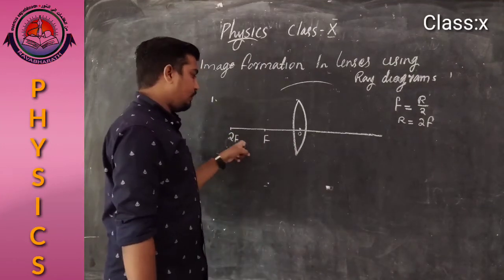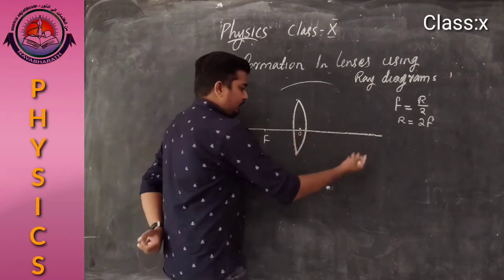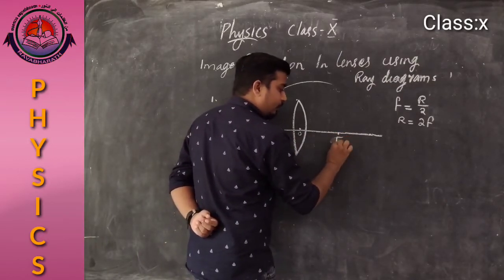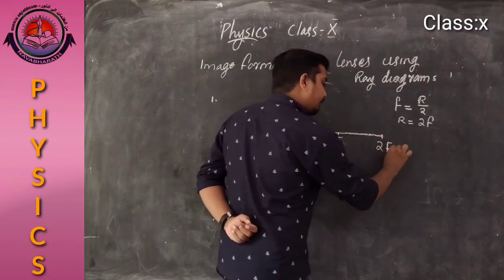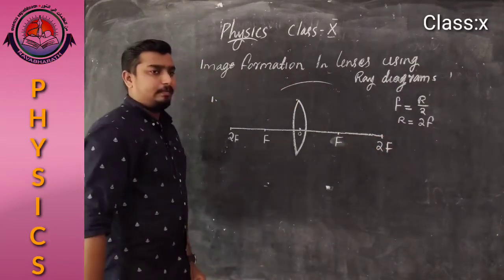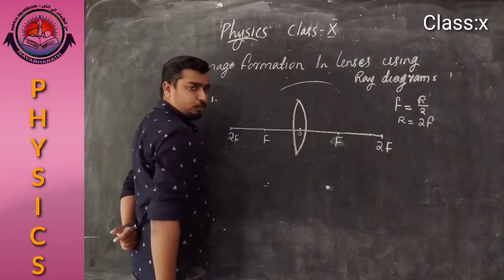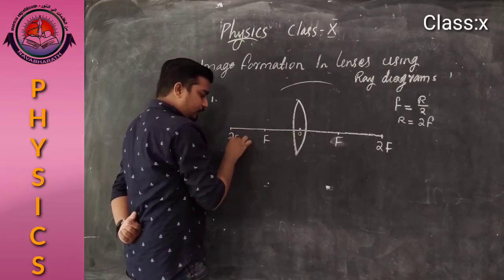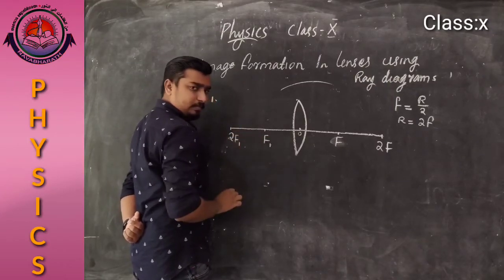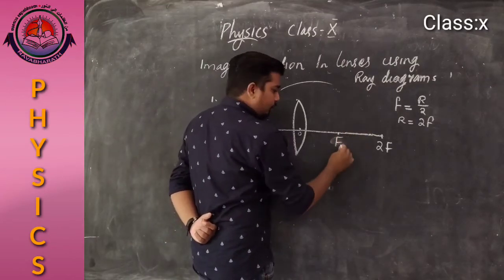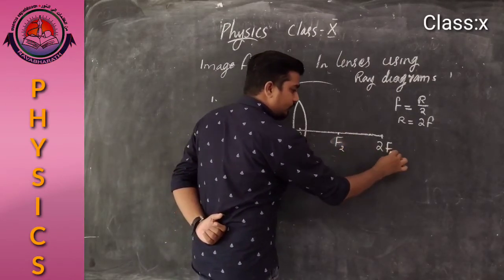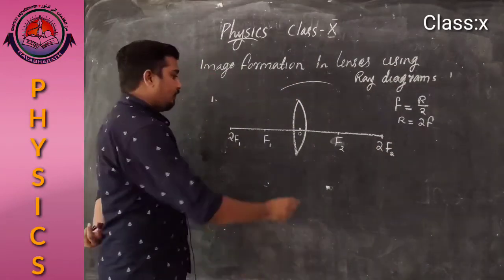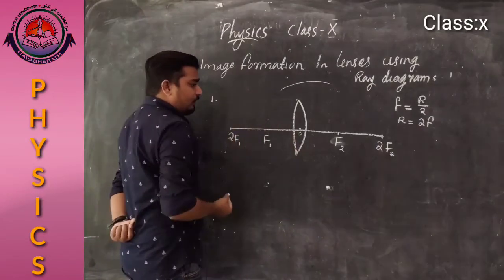Therefore, this length is F and the total distance is 2F. On side 1 we have F1 and 2F1, and on side 2 we have F2 and 2F2. The first rule is: when light is coming from an object parallel to the principal axis...